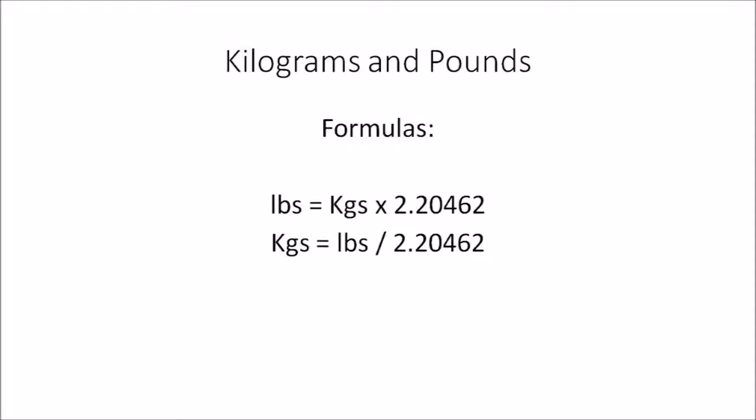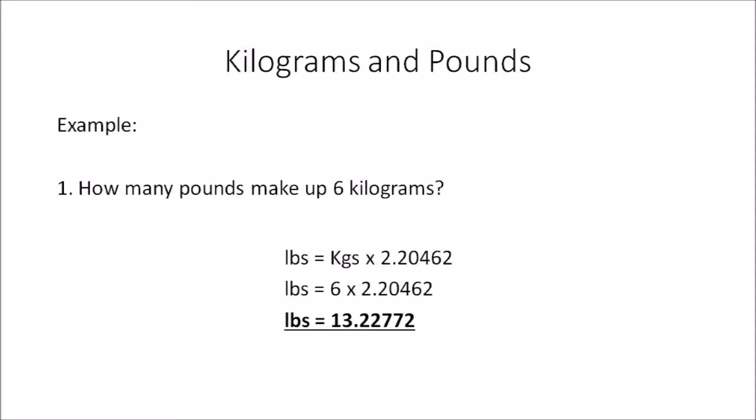Let's look at an example: how many pounds make up 6 kilograms? Using the formula pounds = kilograms × 2.20462, we substitute 6 kilograms: 6 × 2.20462 = 13.22772 pounds.